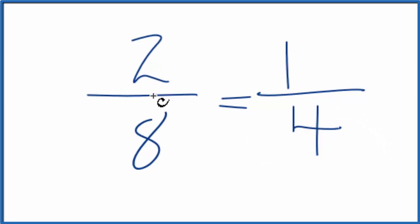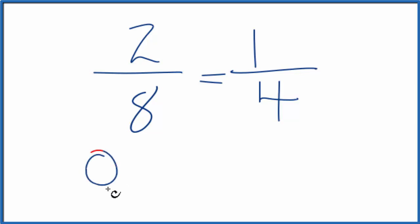If you were to divide 2 by 8 on a calculator, you'd get 0.25. If you divide 1 by 4, 0.25. They're equivalent fractions. They have the same value.